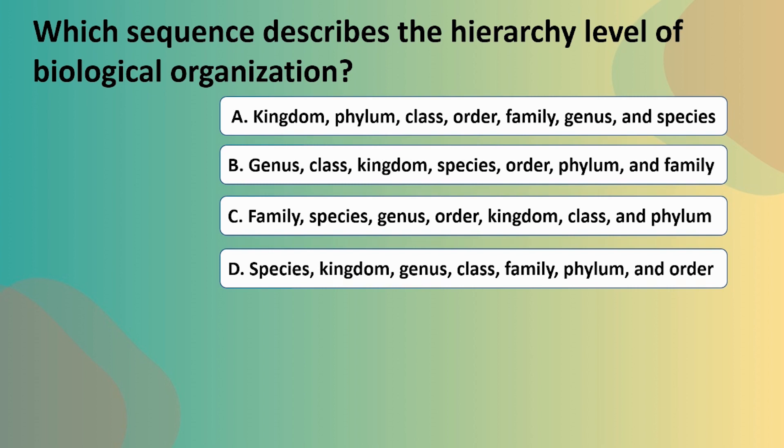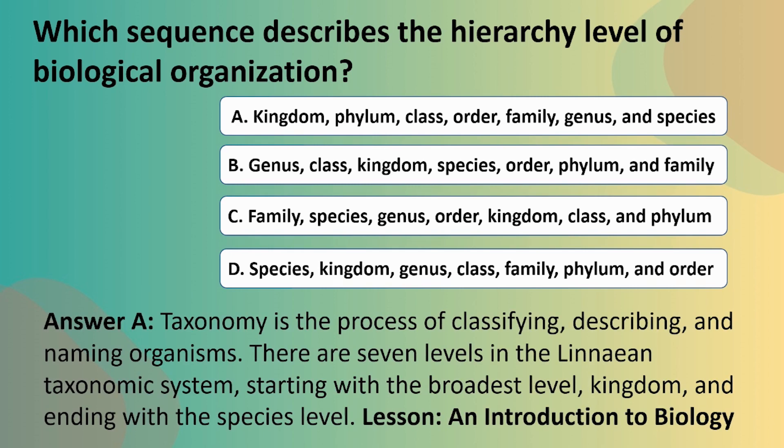So take a moment to think about this. But if you'll recall from our material, this taxonomic system is just something you kind of have to memorize. The answer is A, because taxonomy is the process of classifying, describing, and naming organisms. There are seven levels in the Linnaean taxonomic system, starting with kingdom and going all the way down to species.